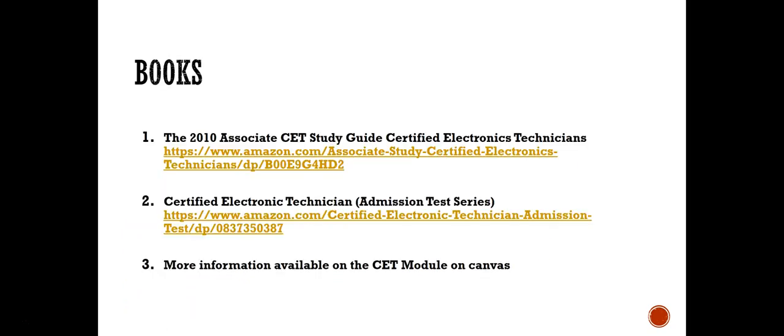What books do you need to study from? The basic book is the Associate CET Study Guide Certified Electronics Technician, available on Amazon. Another book is Certified Electronic Technician Admission Test Series, also available on Amazon. There's more information that I'll provide in the CET modules on Canvas.